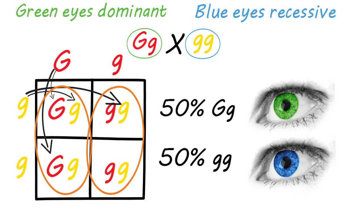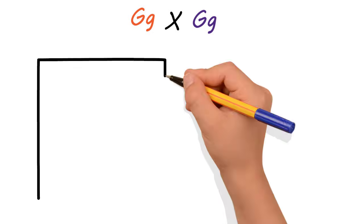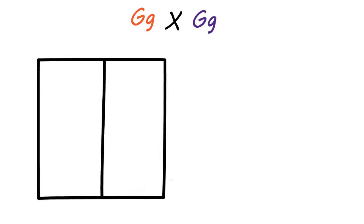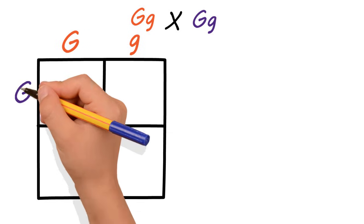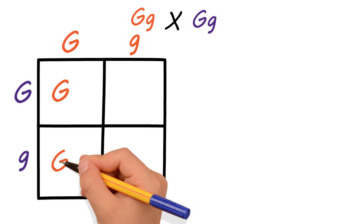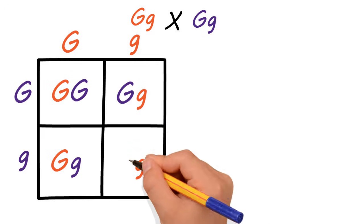Let's look at another example. We'll cross two genotypes that are heterozygous for eye color — big G, little g crossed with big G, little g. These colors are just for illustration purposes. We again draw our Punnett square, put one gene on top and the other down the side, then carry the letters through to their respective quadrants and analyze the results.